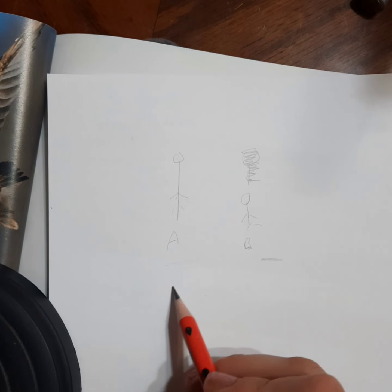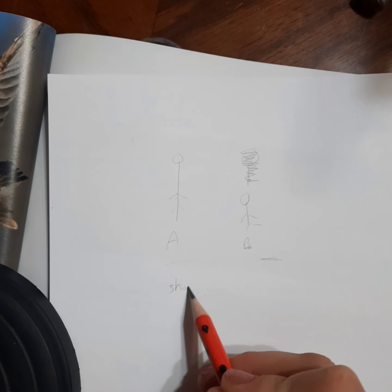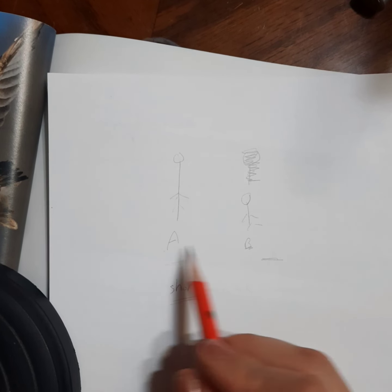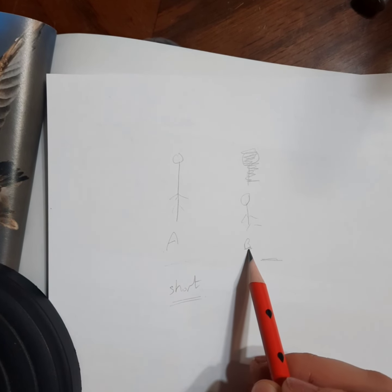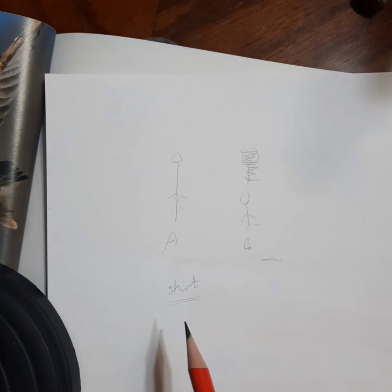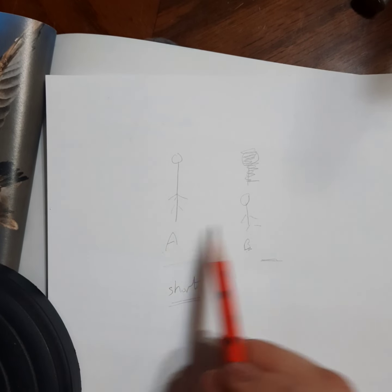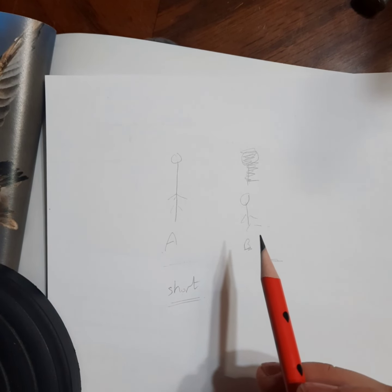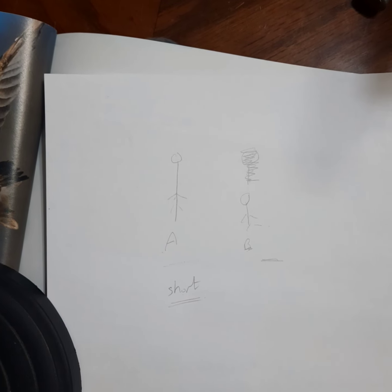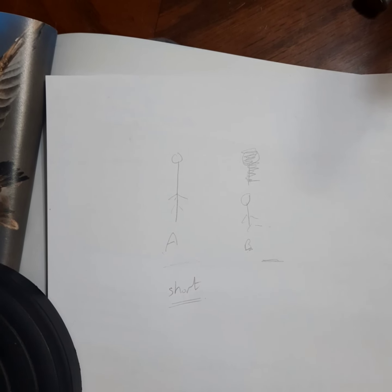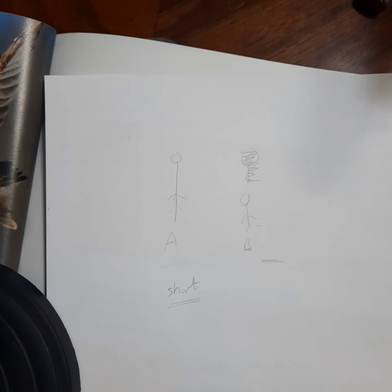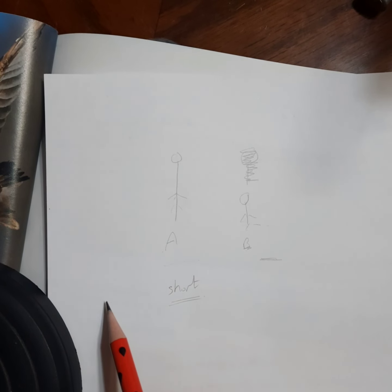طيب خلينا نستخدم كلمة short to compare between A and B. What should we say? في عندي B بنحكي انه هو اقصر من A. لما يكون عندي two things بنسميها comparative adjective. هي عبارة عن صفة بنستخدمها لما نقارن بين شغلتين، شخصين، مكانين، زمانين، المهم شغلتين شو ما يكون.